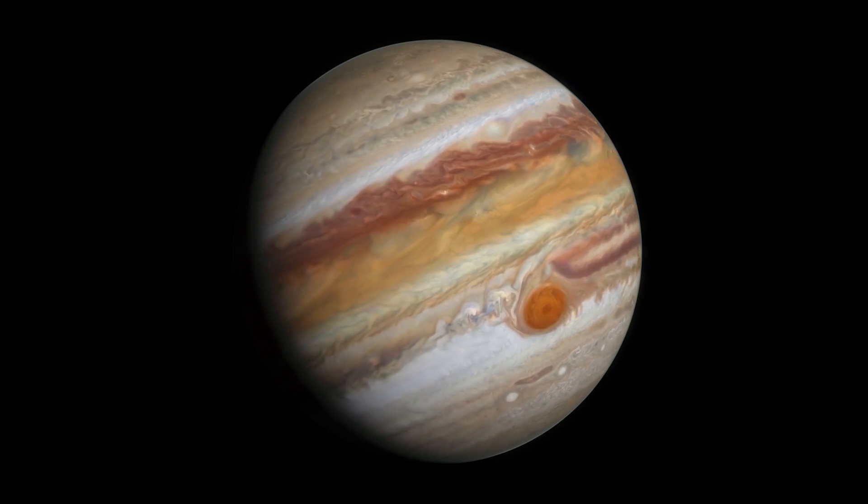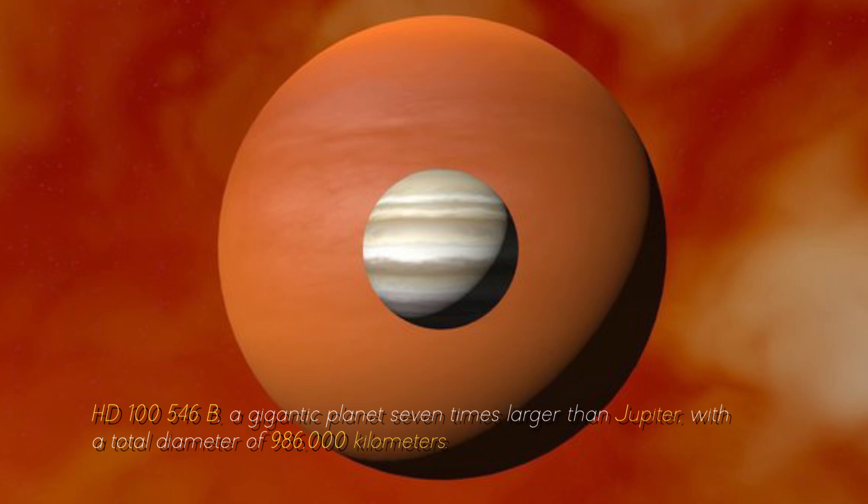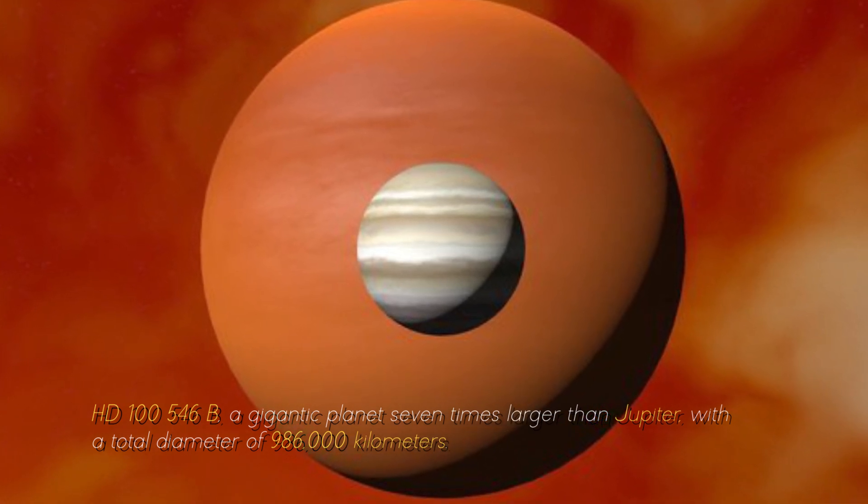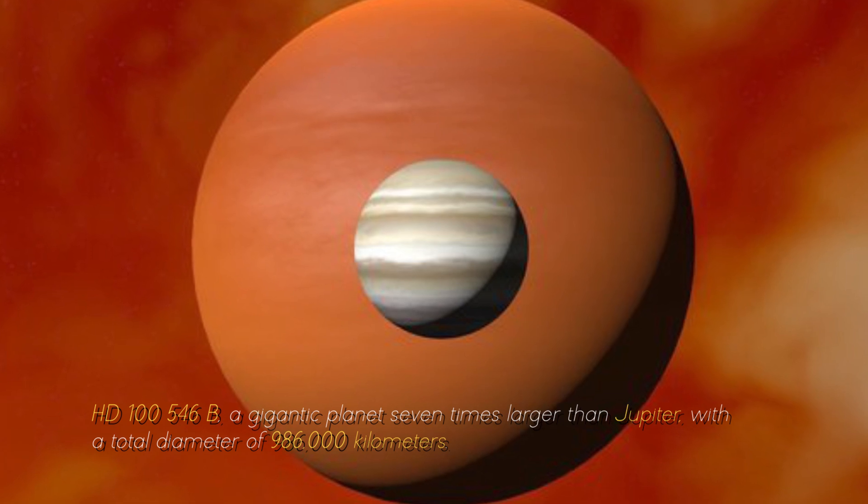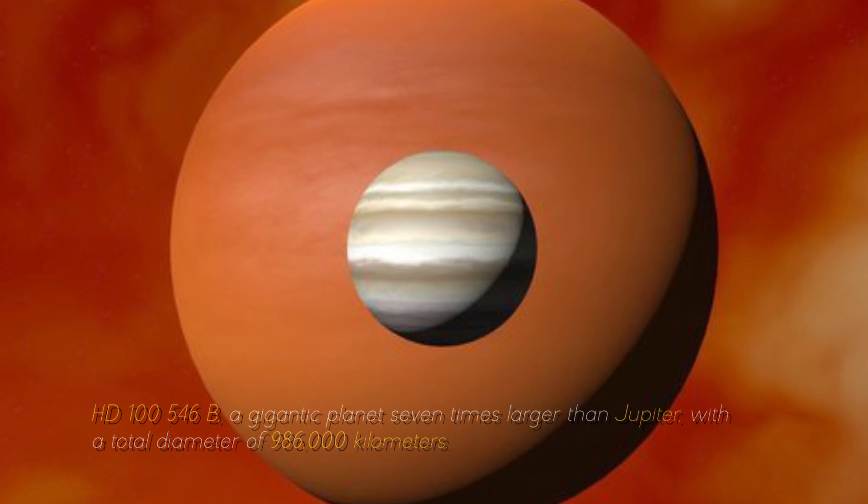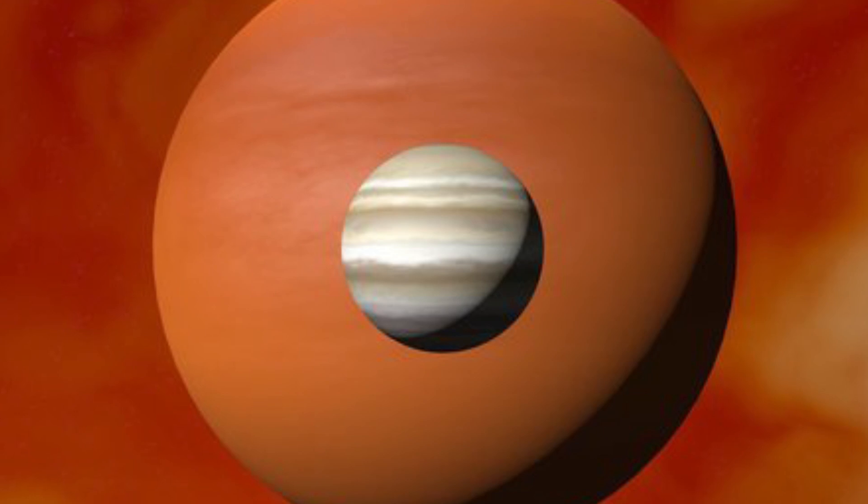Now, let's compare Jupiter with the largest planet in the known universe, HD-10546 b, a gigantic planet seven times larger than Jupiter, with a total diameter of 986,000 kilometers. You can imagine what Earth would look like near this cosmic monster, can't you?